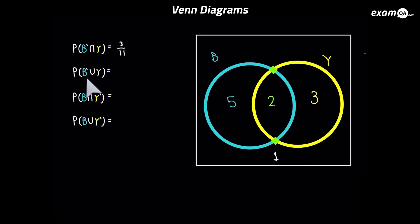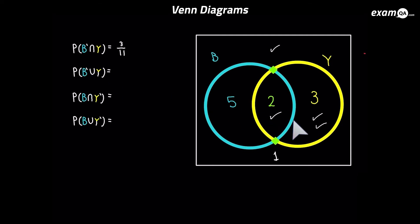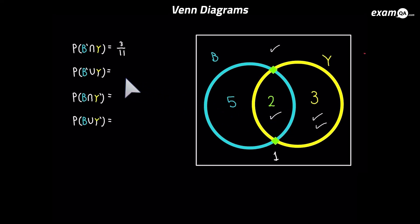This time we have the probability of 'not B or Y'. Tick every position of not B and every place where it's Y. This time it's OR, so it could be either of the two — look at every place which has got a tick, whether it be one or two ticks. So it's the outside, the 3 and the 2. Three plus two plus one gives us 6, so it's 6 over 11.